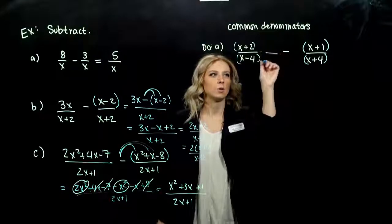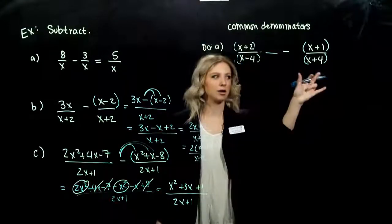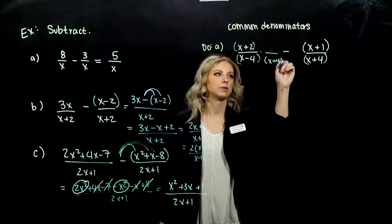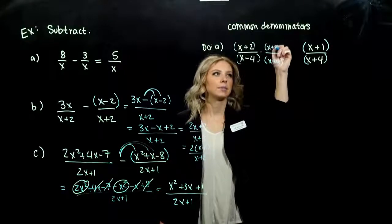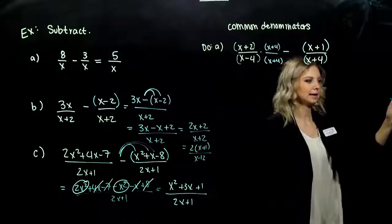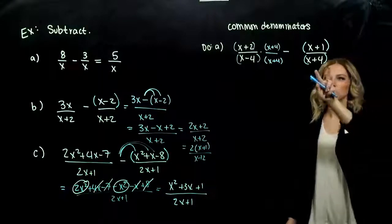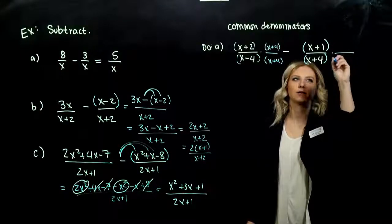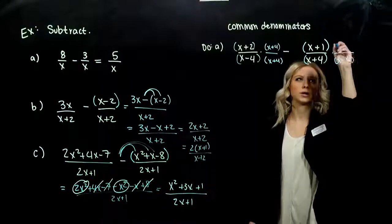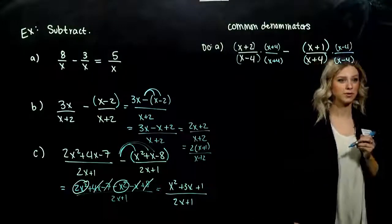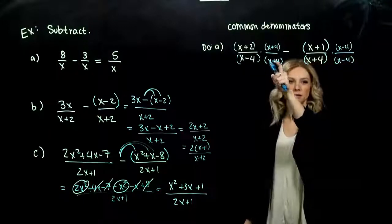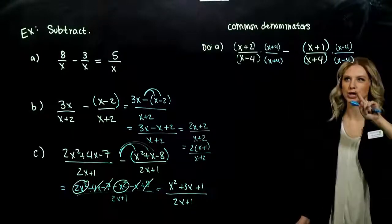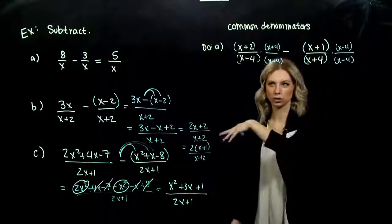Starting with the first term, what is this one missing that my other term has? A factor of x plus 4. Whatever I do to the bottom, I have to do to the top. On my second term, what is this one missing that the other one has? A factor of x minus 4. What are we really multiplying by in each of these cases? 1 — same thing divided by the same thing. It's 1, changing what it looks like, not altering the problem altogether.